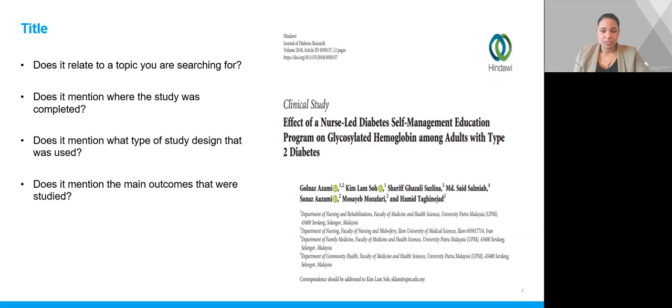So with your article that you will review, you'll first look at the title. Does it relate to your topic? How descriptive is the title? Does it mention where the study was completed? What type of study design? Does it mention the main outcomes? There will be a lot of variation in the titles, but it's a good habit to ask yourself these questions when evaluating your article.